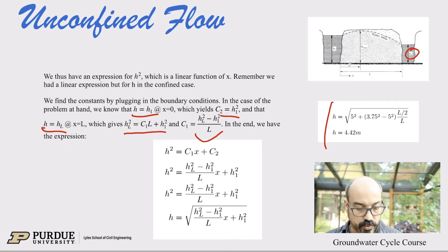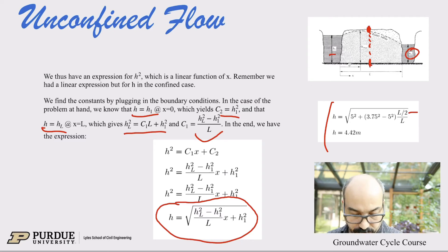Okay. And now if we, to answer the original question, what is the head at the midpoint? So remember the question was, what is the head at the midpoint? So we can plug in the numbers. We have 5 and 3.75 are the head h1 and h2. So we replace it in this expression here. So 5, 3.75, L is 500 meters. So L over 2, divided by L. And then we plug everything in and we find 4.42. Okay. So the head at the midpoint is 4.42 meters.